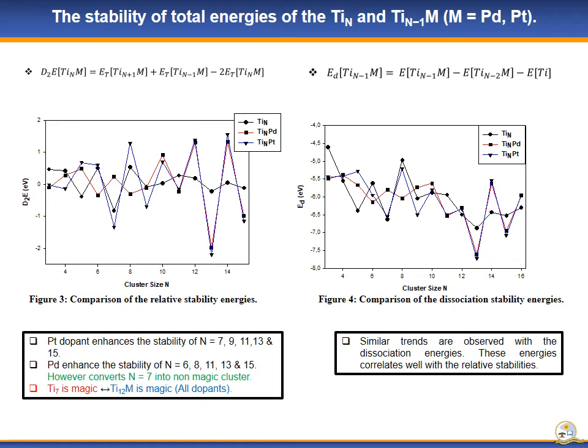Figure 3 shows the relative stability and reveals that platinum and palladium enhance the stability of the titanium nanoparticles. Palladium converts N=7 into a non-magic cluster, whereas platinum enhances the bonding energy of N=7. Both dopants shift N=7 as the magic cluster to N=13 as the magic cluster.